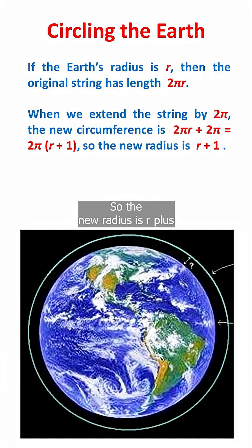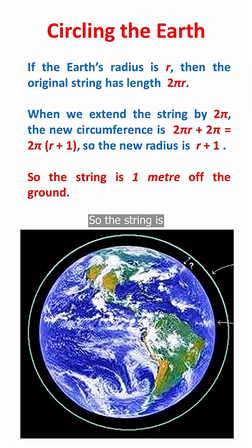So the new radius is r plus 1, which is one metre more than before. So the string is a whole metre off the ground.